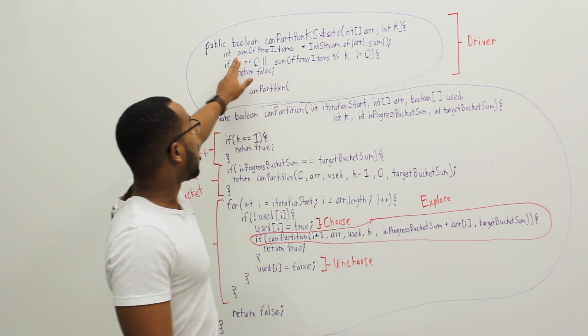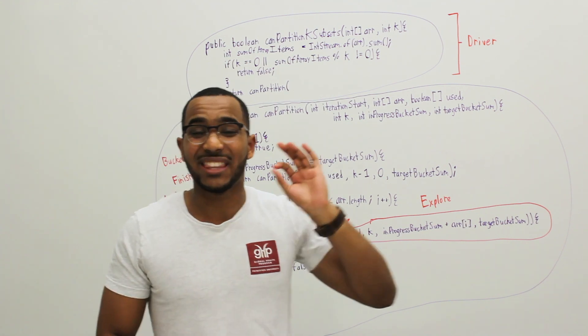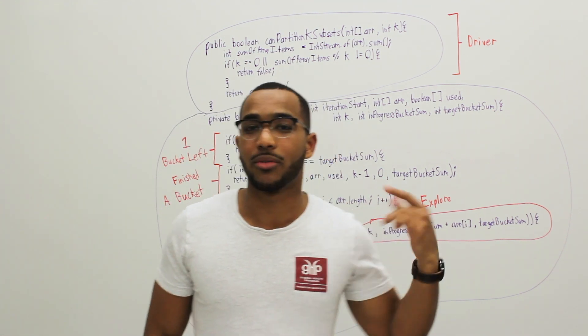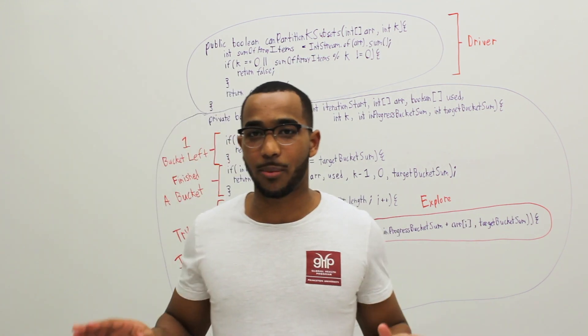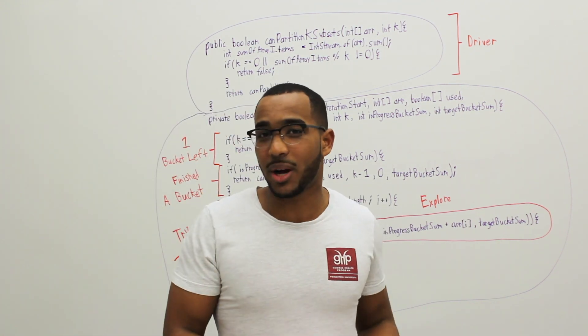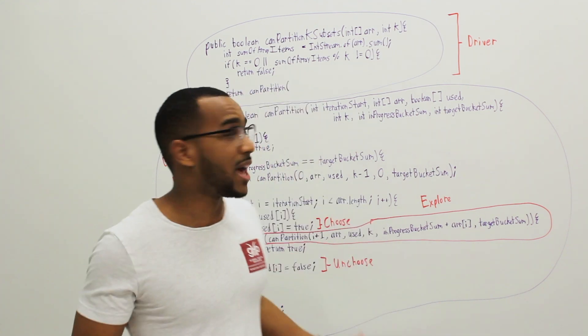We have our driver function. Our driver function, first we get the sum of the items. In our original thing, we saw the sum was 20. If k is 0, we cannot fill 0 buckets. That's impossible. If we have an array and we need to fill 0 buckets, we return false. We can't do that.